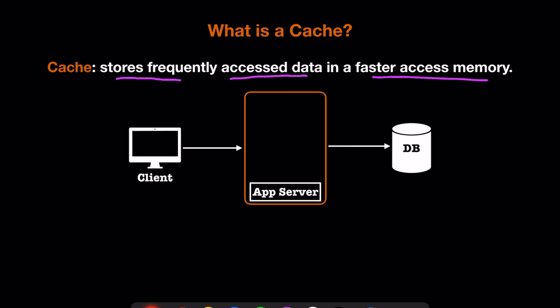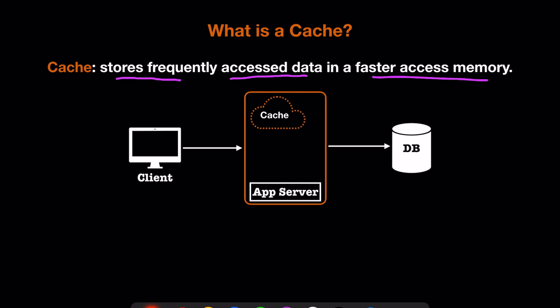Rather than making a million DB calls, we can store the data in a local memory called a cache. The first time a user calls us, we get the data from the DB and store it in the cache. When another customer calls for the same data, we return it from cache rather than calling the DB again. This reduces the total number of network calls and also improves latency.